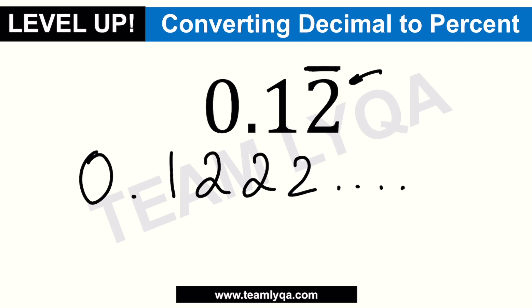Now, knowing that, what do we do? We said we're converting decimal to percentage. So D to P — the movement is to the right. Two times. So we move the decimal once, then once more. The result is 12 point something.